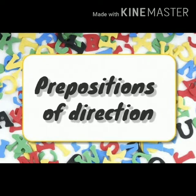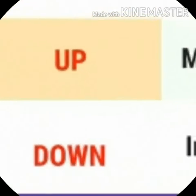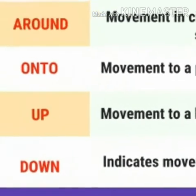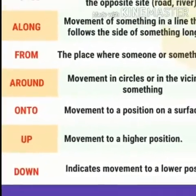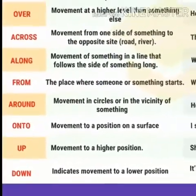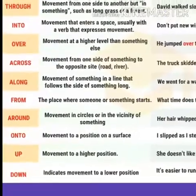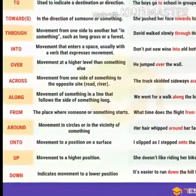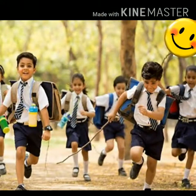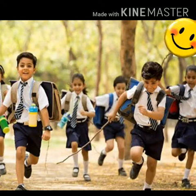The next one is prepositions of direction. These prepositions show us in which direction something or someone moves. They are quite easy to understand as they are less abstract than place and time. Prepositions like through, across, up, down, over, around, off, into, and to are some prepositions of direction. Among these, the most commonly used word is 'to'. See the example: the children are going to school — school is their destination and they are moving towards it.